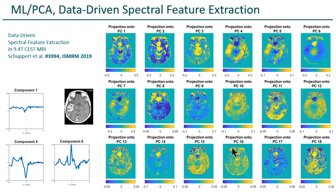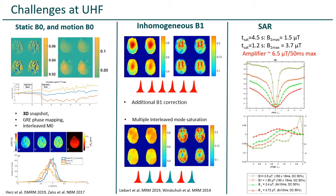Of course, we have a lot of challenges. You have to take care of B0 and motion-induced B0 changes. Motion is a big issue, so we try to solve that with 3D snapshot and co-registration. B1 is very inhomogeneous, and you have to do B1 correction or use parallel transmit methods to mitigate that. SAR can also be a big issue at 9.4T — sometimes if you have a protocol at 3T, you cannot directly translate it to 7T or 9.4T because it's too much SAR. However, going to lower power sometimes has benefits.